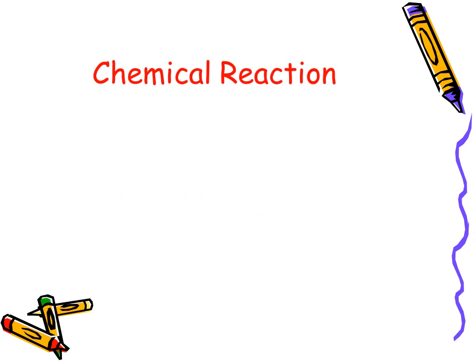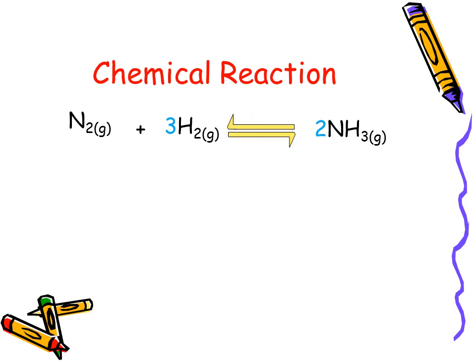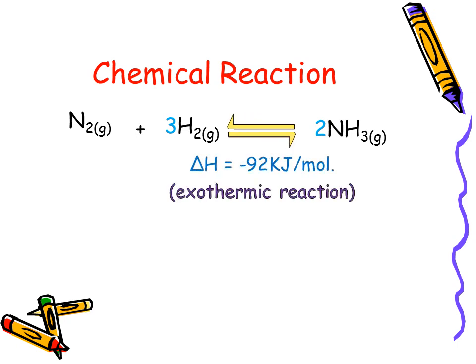The chemical reaction involves one mole of nitrogen reacting with three moles of hydrogen to give two moles of ammonia gas in a reversible reaction. The enthalpy change shows that the reaction is exothermic, in which 92 kilojoules per mole of heat energy is released.